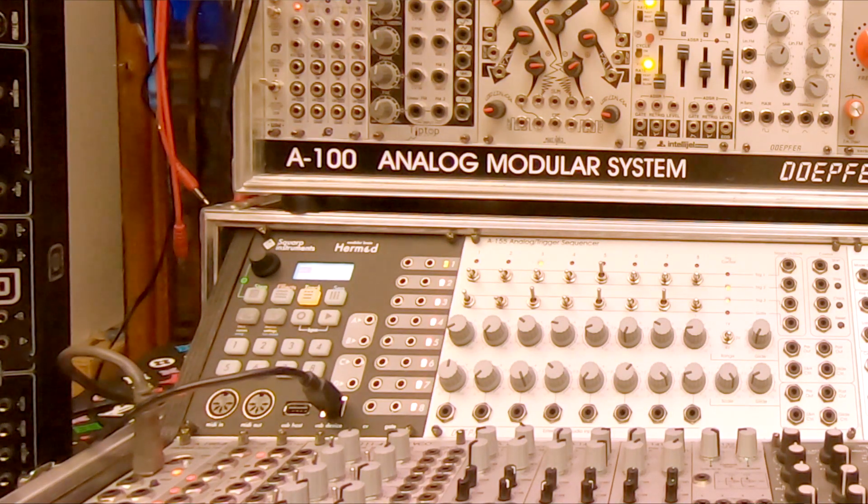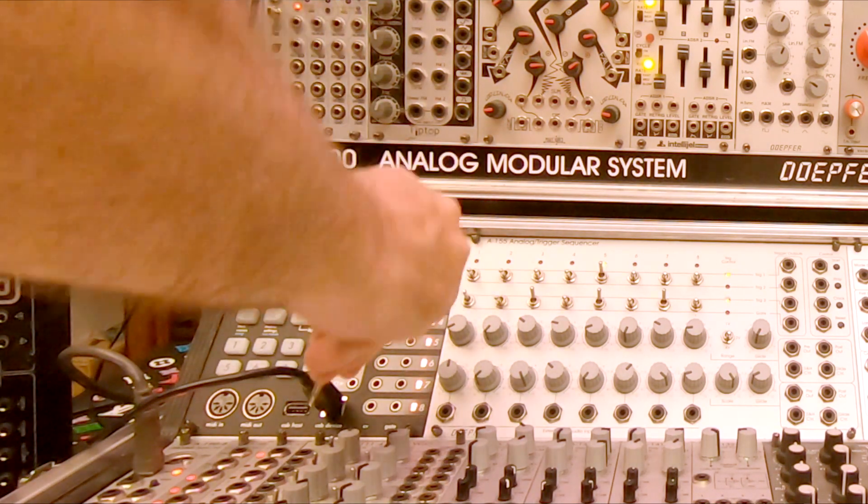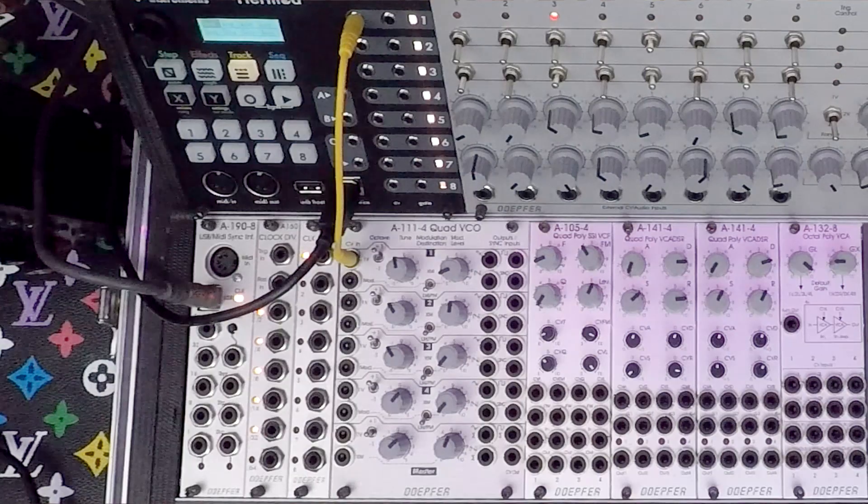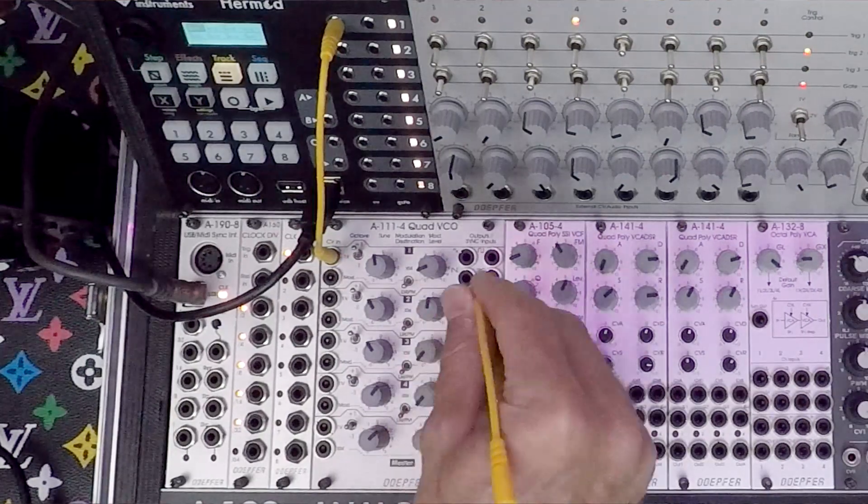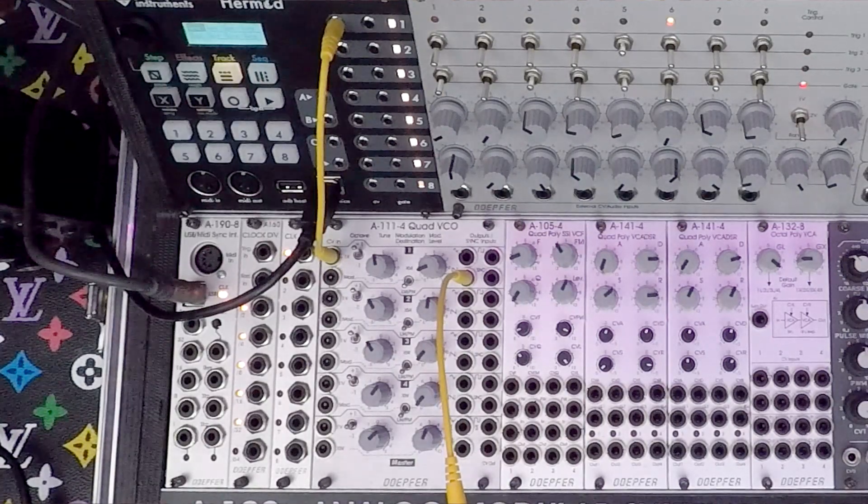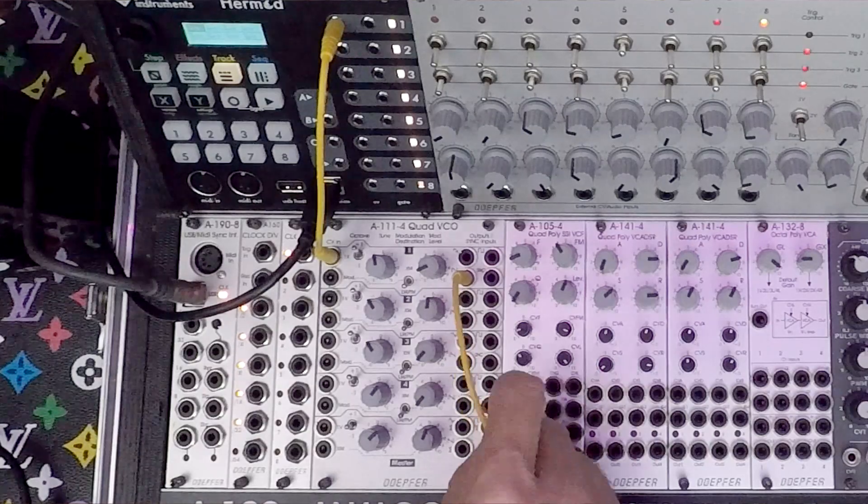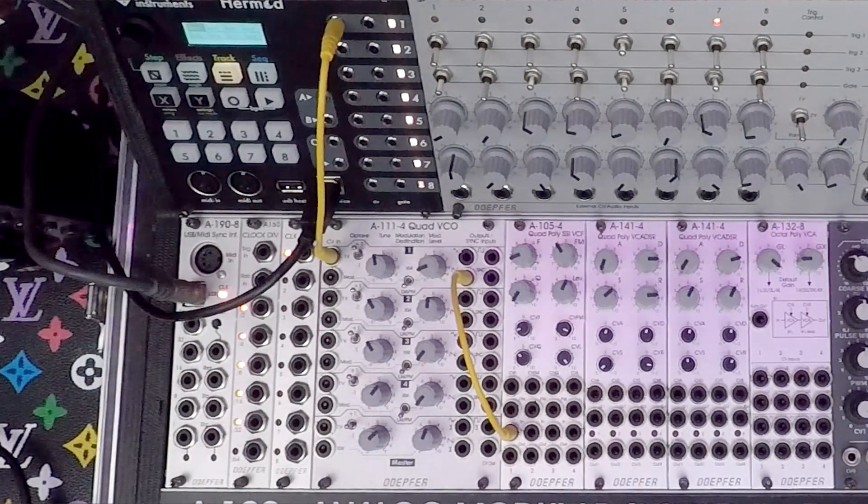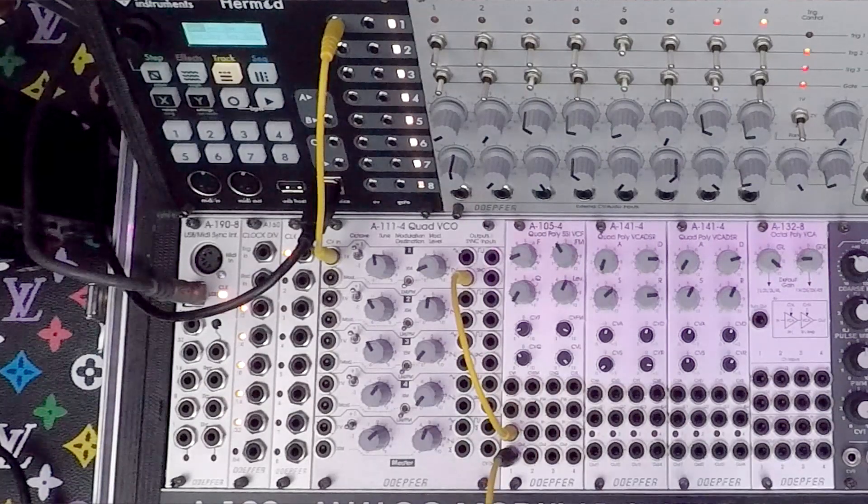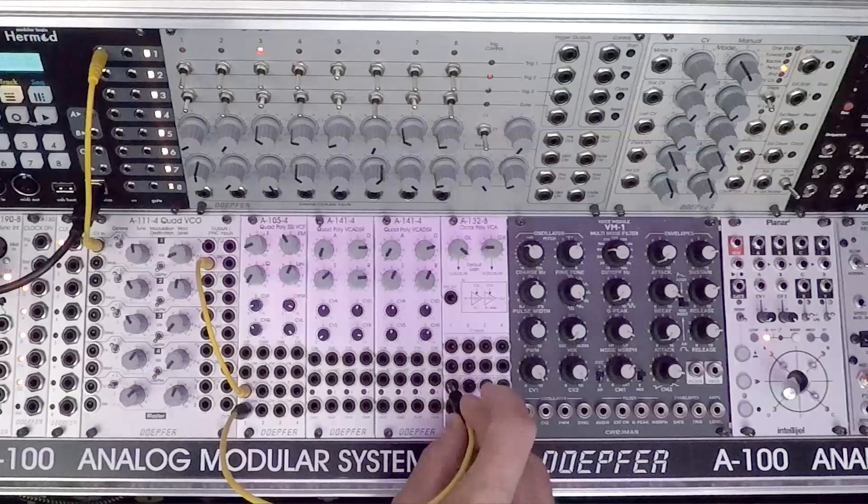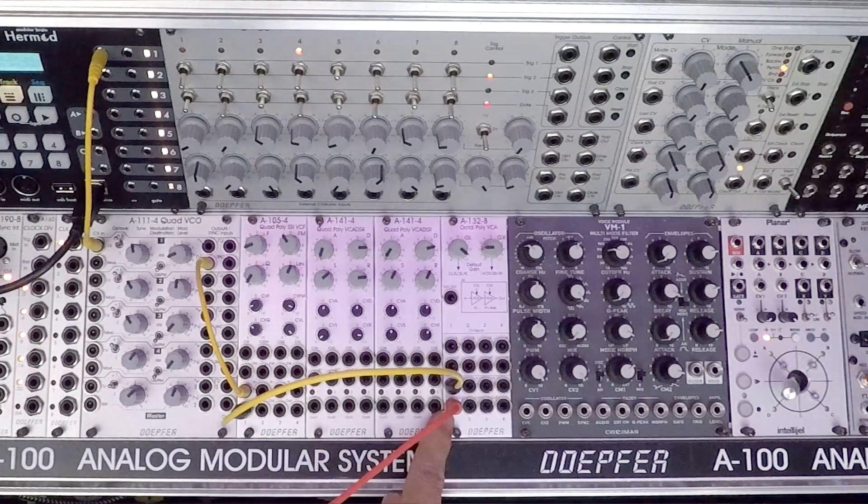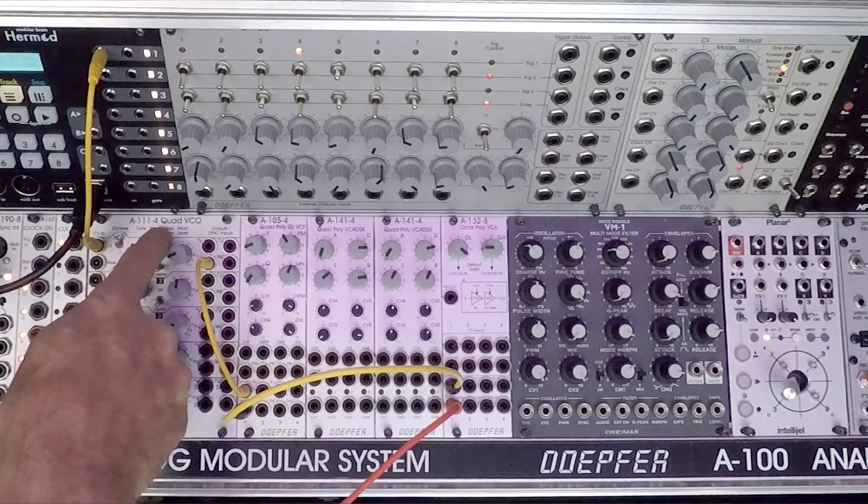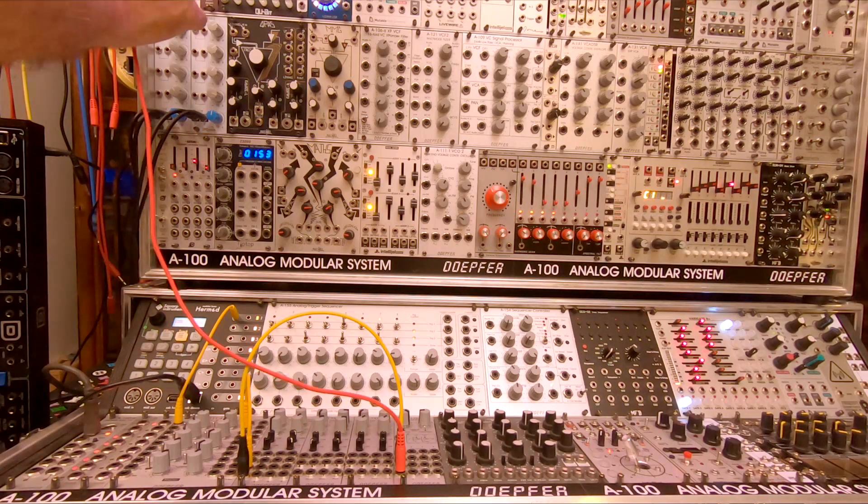So first I take the CV of voice number 1 into the oscillator, the CV volt per octave, of the A111-4 quad VCO from Doepfer. And then all oscillators I'm going to use are gonna be sawtooth. This oscillator output here I'm gonna put inside the A105-4. It's a quad VCF so it's going into the input. Then the output of this VCA is going to go into the octa-poly VCA. So we want the audio input. And this output here from the VCA, there is four VCAs. So the VCA1 coming from the filter 1, coming from oscillator 1. This output from the VCA1 is gonna go into the mixer here.